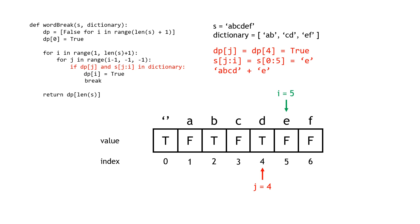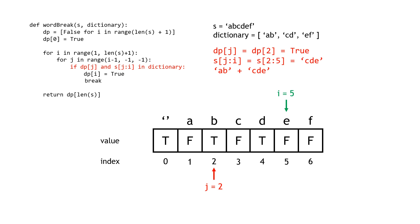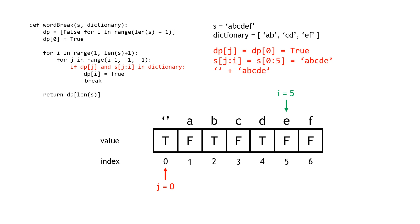For I equals five, we go through all J values. The left side ABCD is true but right side E is not in the dictionary. The left side ABC is false. Left side AB is true but right side CDE is not in the dictionary. Left side A is false. Left side is the empty string but right side ABCDE is not in the dictionary. So the I equals five slot remains false — we can't form ABCDE with any combination from our dictionary.